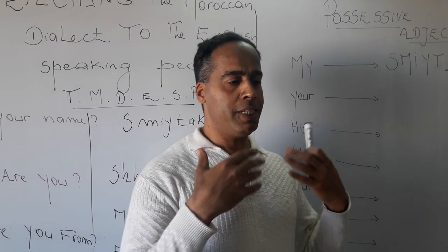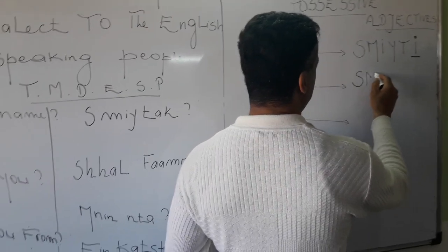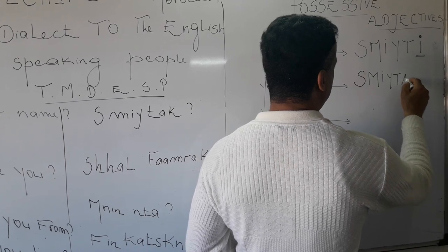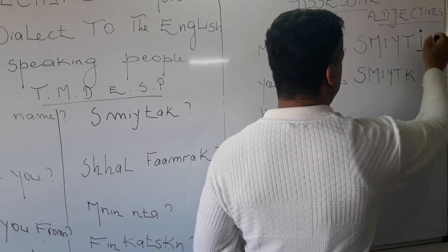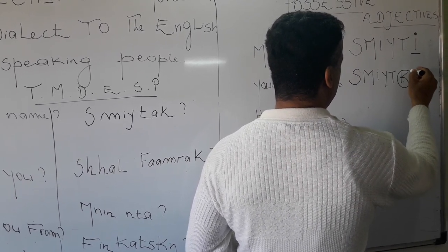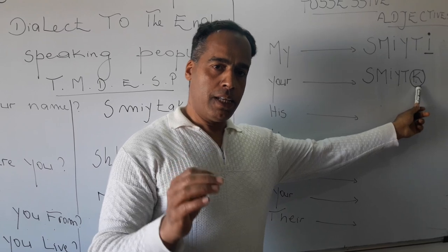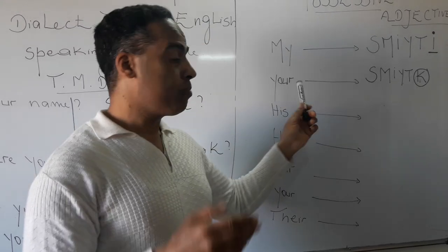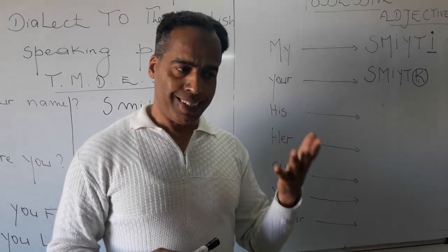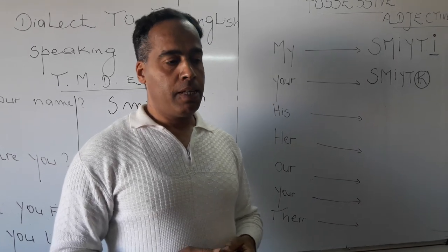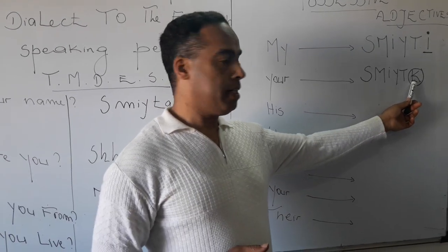When we say 'your name,' it is 'smeetak.' So we change the letter 'i' at the end with 'k.' The letter 'k' means 'your.' When you add 'k' at the end of any word in the Moroccan dialect, it means 'your.' For example, 'your name' is 'smeetak,' and 'your house' is 'balak.' That is the function of 'k' at the end of a word.